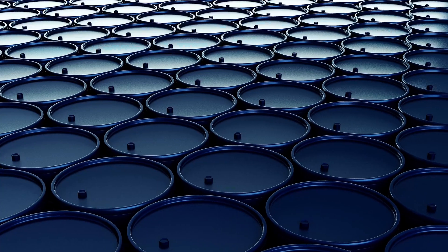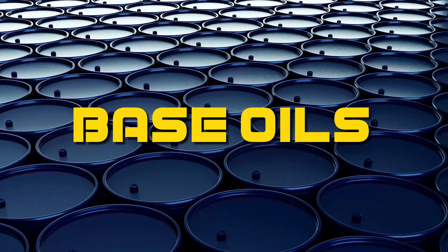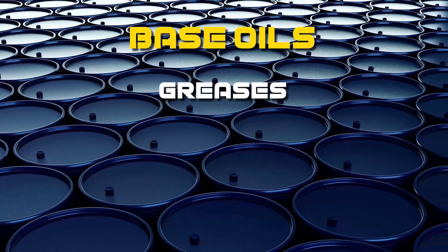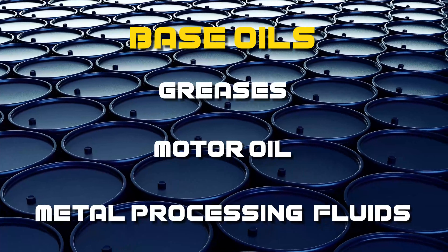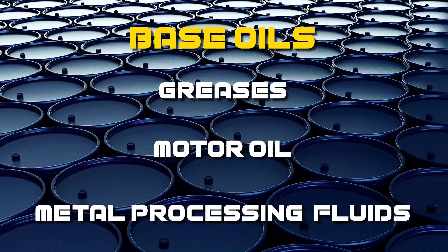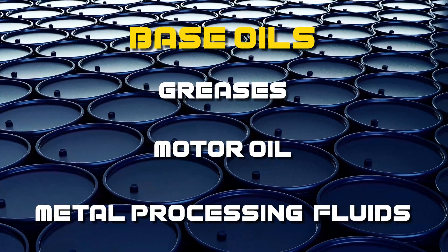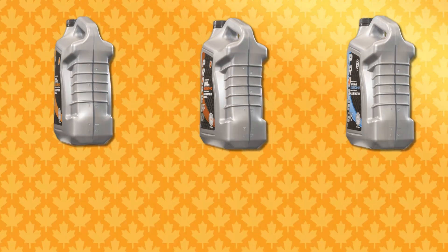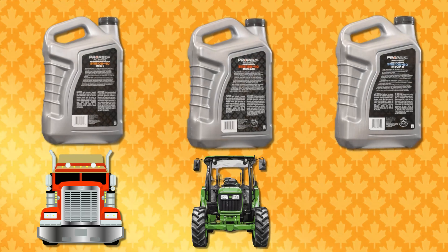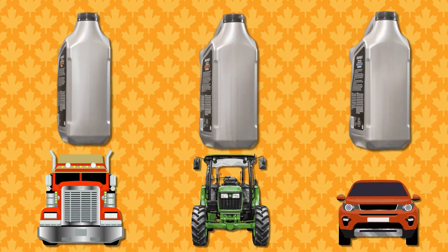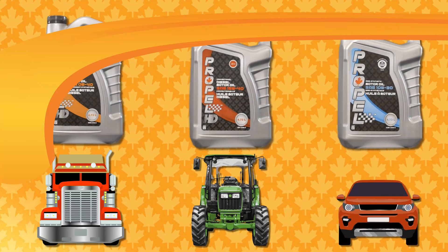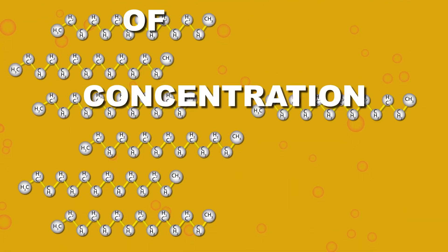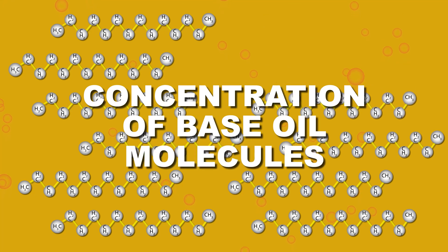Now, let's take a look at base oils. A base oil is used to manufacture products including greases, motor oil, and metal processing fluids. Oils require a specific base with particular compositions and properties in order to fulfill the needs of the application it's being used for. Whether or not a crude oil is suitable to be made into a base oil is determined by the concentration of base oil molecules.